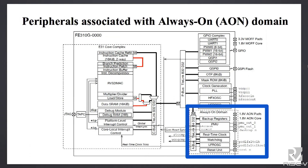Here is the E-Series platform from SiFive. Here we have the core and all the back models and different models. We also have the tightly-linked buses. Here we are highlighting the always-on domain connected to the tightly-linked bus. In this always-on domain, it's supposed to work for low-power embedded systems for always-on sensors.